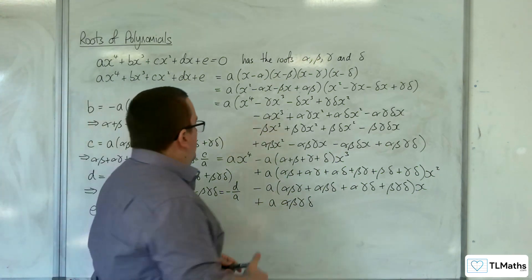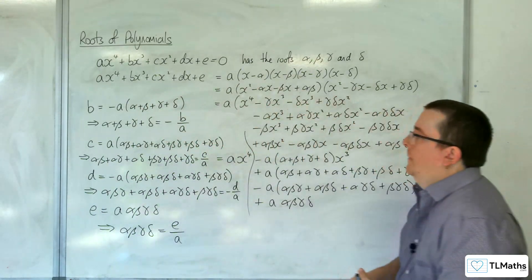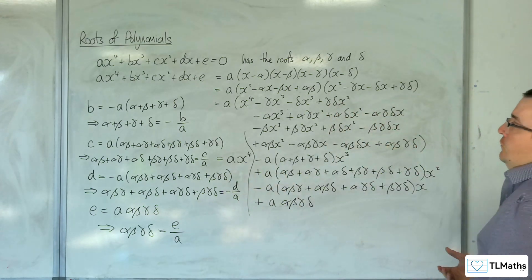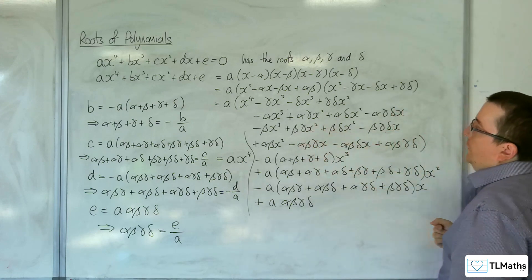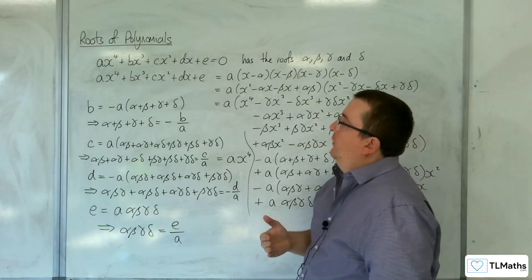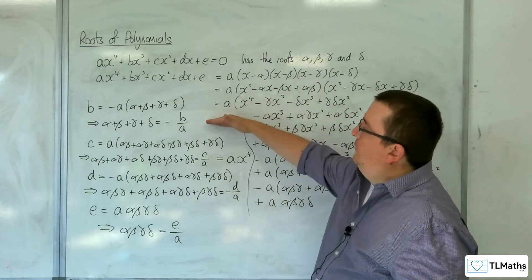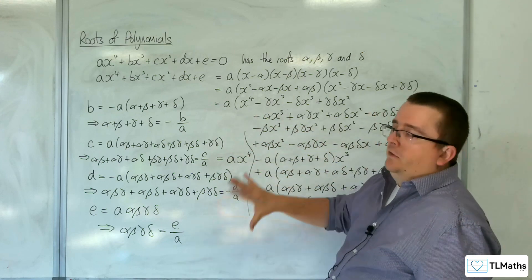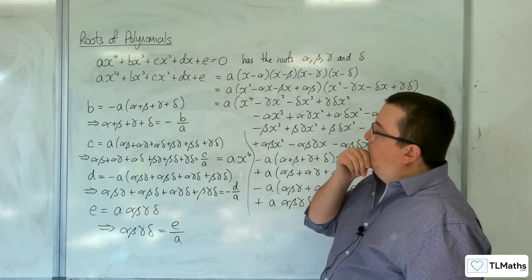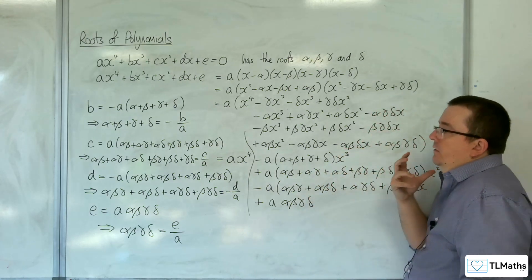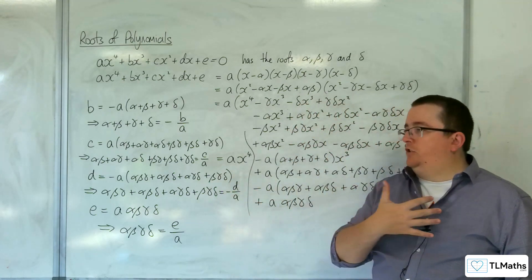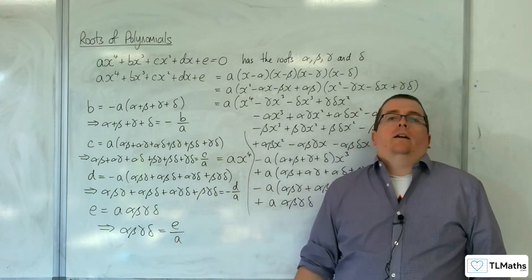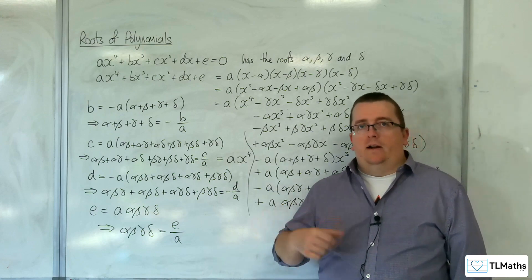Things to notice: as has been shown with quadratics and cubics, the sign keeps changing as the terms move on — negative, positive, negative, positive. You can see how this pattern can be extended ever further if you ever needed to go to quintics or higher polynomials.